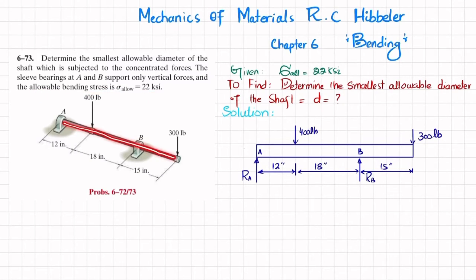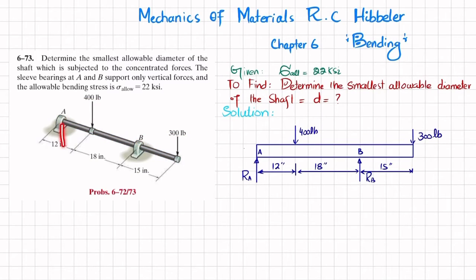As you can see, this is the shaft with two concentrated loads — 400 and 300 pounds — applied at specific points. At A and B we have sleeve bearings that only exert vertical reaction forces. We need to find the smallest allowable diameter of the shaft.